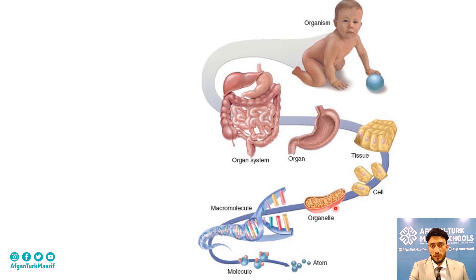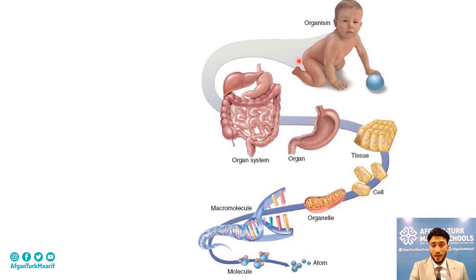At different stages, if organelles are produced, cells are formed. Cells then change into tissues, tissues are organized into organs and organ systems, and at the final stage this results in an organism.